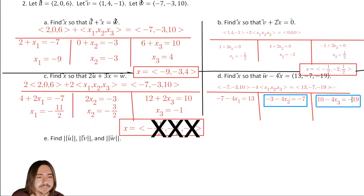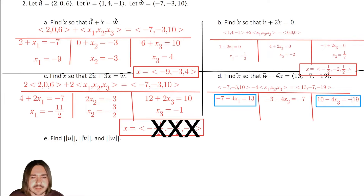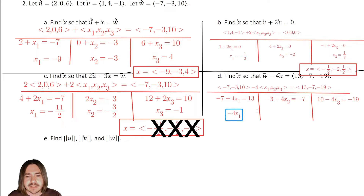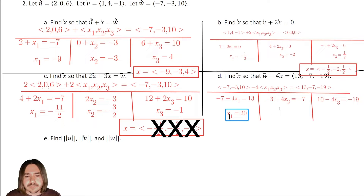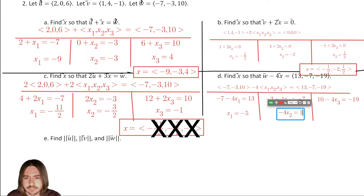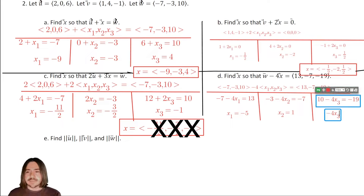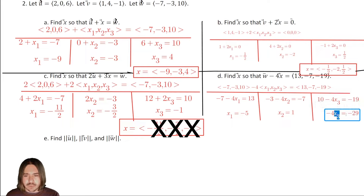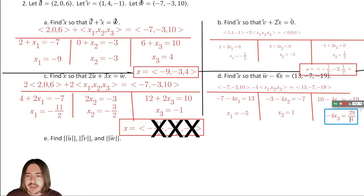Solving each equation: first, add seven to both sides to get negative four times x1 equals twenty, then divide by negative four to get x1 equals negative five. Second, add three to both sides to get negative four times x2 equals negative four, divide by negative four to get x2 equals one. Third, subtract ten from both sides to get negative four times x3 equals negative twenty-nine, divide by negative four — a negative over a negative is positive — so x3 equals twenty-nine over four.